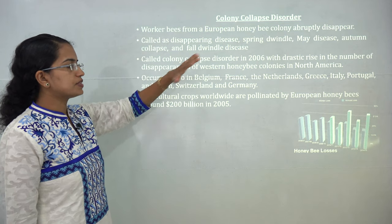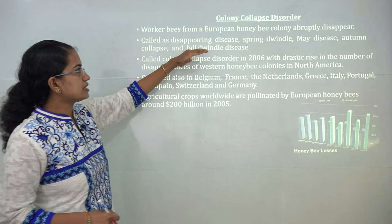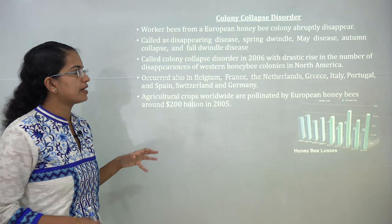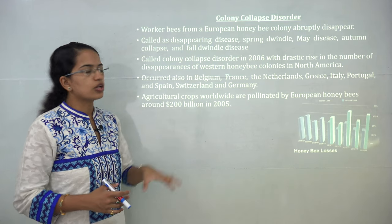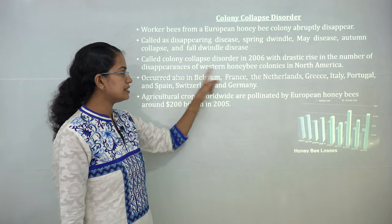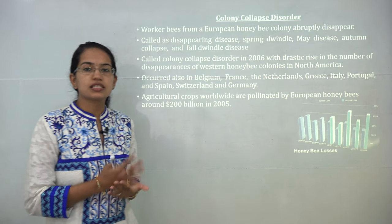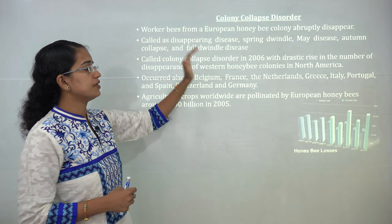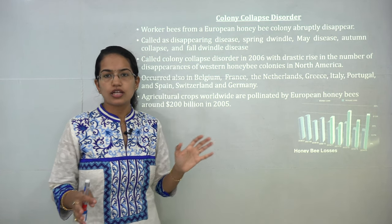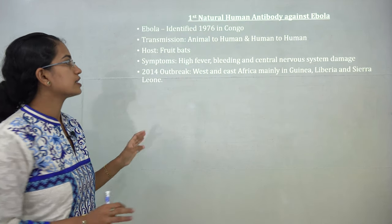Colony collapse disorder is an important topic. It started in Europe and was also known as disappearing disease, May disease, or autumn collapse. There was a sudden decrease in honeybee colonies in North America and Europe, including Belgium, France, Netherlands, Greece, Italy, Portugal, and Spain. This decrease severely affected agriculture because bees are vital for pollination, impacting nearly 200 billion dollars in 2005 and leading to a significant decline in agricultural output.